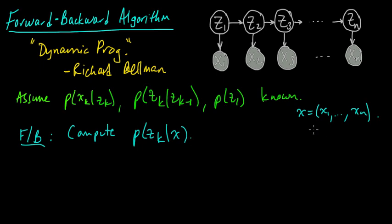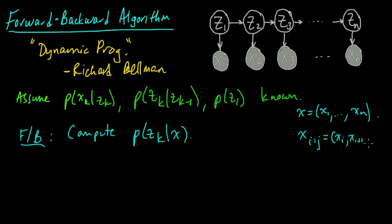Let me also introduce a notation: I'll use a variable with subscript I colon J to denote the sequence from XI up to XJ — that is, XI, XI+1, XI+2, up to XJ. So for example, X here would be X1 to N. This will be a handy notation to use.